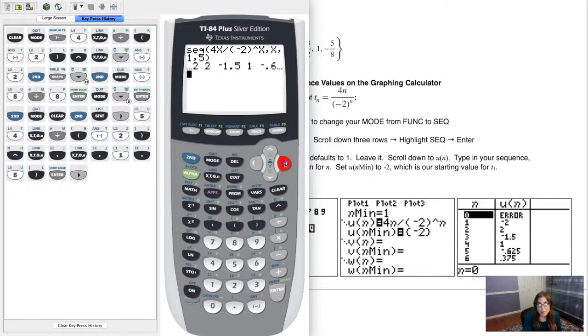So if I went into function mode and did this, I can hit second stat ops, I can do option five, I can do 4x—it'll be back as x now because I'm back in function mode—divided by negative 2 to the x, comma x, comma 1, comma 5. And when I hit enter, then I have to scroll left and right to see all of those numbers. It's not actually too terrible in this example only because most of these numbers are whole numbers, but when there's fractions with repeating decimals, it can get cumbersome. So I really like this vertical view.